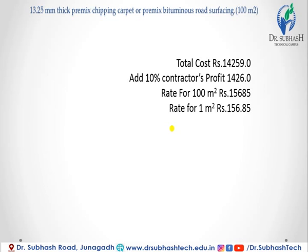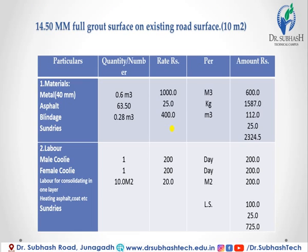Adding 10% contractor's profit of 1,426 rupees, the rate for 100 meter square is 15,685 rupees, and the rate for 1 meter square is 156.85 rupees. Next we discuss the second activity: 50mm full ground surface on existing road surface.